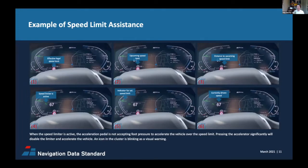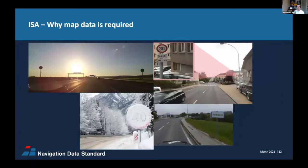Whether passive or active, ISA directly affects the driver user experience. As a minimum, it is visible at all times. If the speed limit applied doesn't reflect reality, the driver may be going too fast or too slow. In all implementations, it may still be possible for the driver to choose to switch the system on or off. Now let's talk about why map data is required for ISA solutions — why does it need a map and can't just use a camera system?